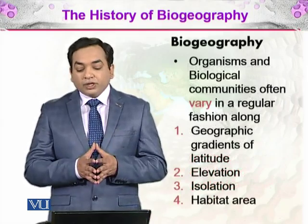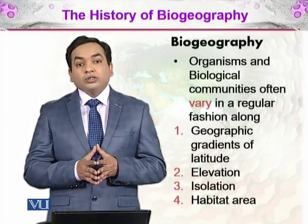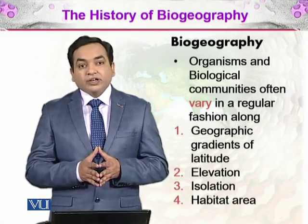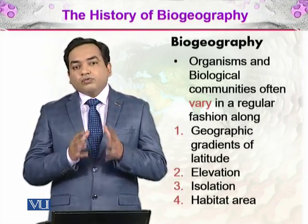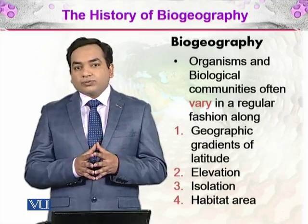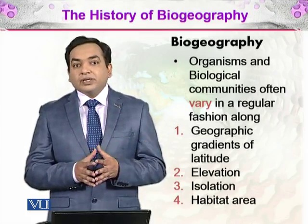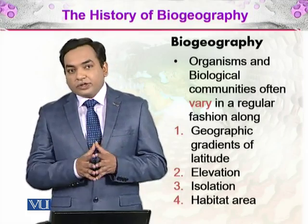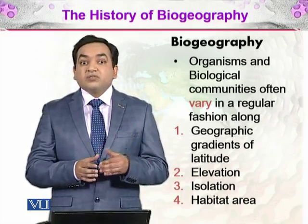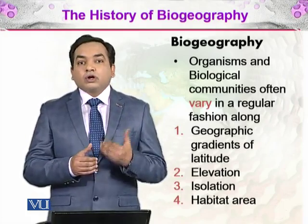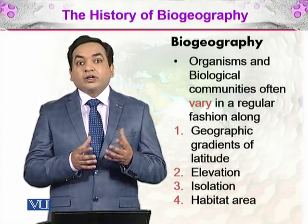In biogeography, organisms and biological communities often vary in regular fashion along geographic gradients of latitude, elevation, isolation, and habitat area. If we look at some part of the Earth, there are organisms found in certain habitats and certain environments that are not present in other environments. For example, organisms in tropical rainforests cannot survive in colder temperate areas or towards the poles, such as the tundra.